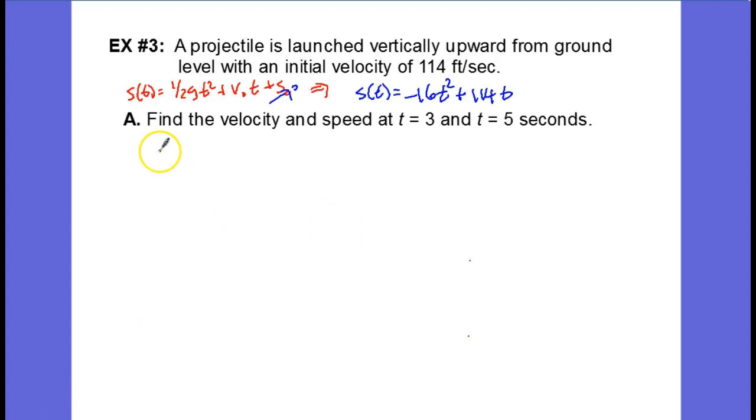Now they ask us to find the velocity and speed at t equals 3 and t equals 5 seconds. So the first thing I'm going to do is write down that the velocity is equal to s prime of t.